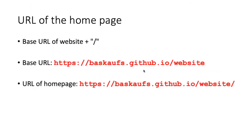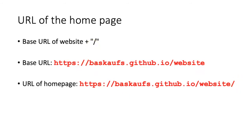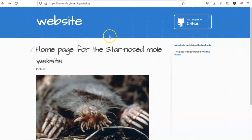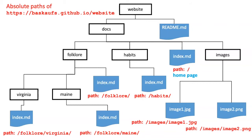Let's take a look at how URLs are constructed for the various pages. The base URL of the website consists of the username.github.io with a slash and then followed by whatever name we chose for the repository. The home page of the website is simply going to be this base URL with a slash put on the end of it. To look at the other pages in the website, I'm going to have to add their path onto the base URL.